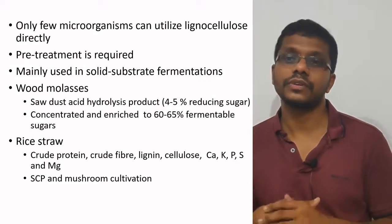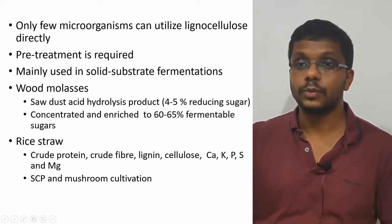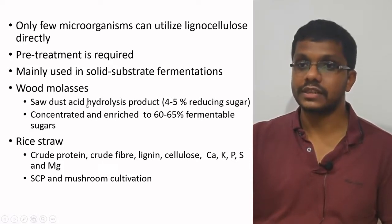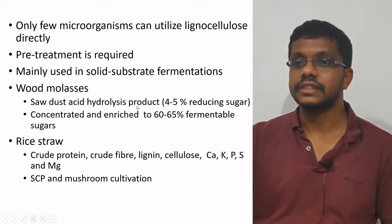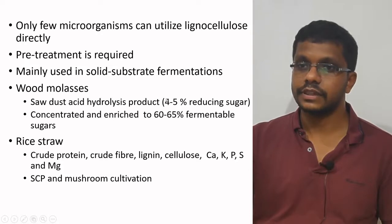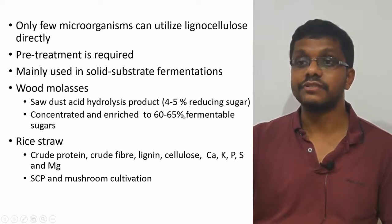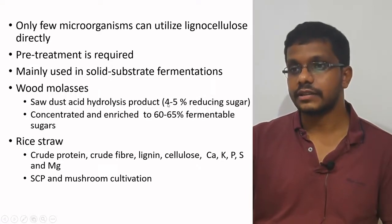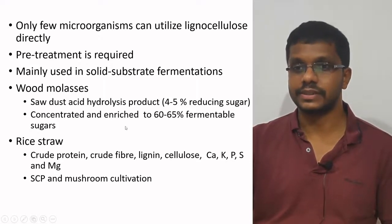There are different sources of lignocellulosic materials. One is wood molasses, which is basically made by converting cellulose in sawdust by acid hydrolysis. We take the sawdust, perform acid hydrolysis, which gives four to five percent reducing sugars, and then go through concentration and enrichment. After concentration we get 60 to 65 percent fermentable sugars.